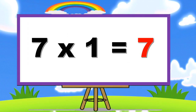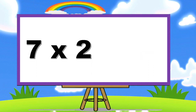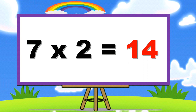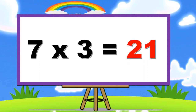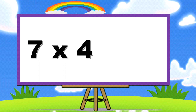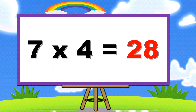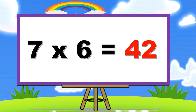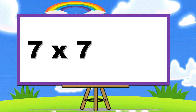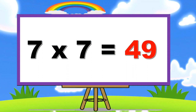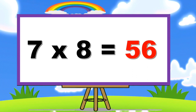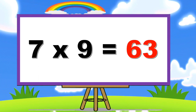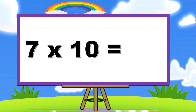Table of 7. Seven ones are seven, seven twos are fourteen, seven threes are twenty-one, seven fours are twenty-eight, seven fives are thirty-five, seven sixes are forty-two, seven sevens are forty-nine, seven eights are fifty-six, seven nines are sixty-three, seven tens are seventy.